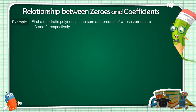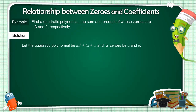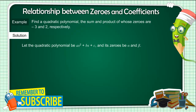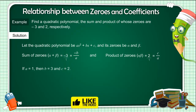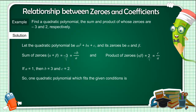Another example: Find a quadratic polynomial whose sum and product of zeros are minus 3 and 2 respectively. Solution: Let the quadratic polynomial be ax² plus bx plus c and its zeros be alpha and beta. Sum of zeros alpha plus beta equals minus 3, which equals minus b by a. Product of zeros alpha·beta equals 2, which equals c by a. Writing 1 as denominator, if a equals 1 then b equals 3 and c equals 2. So one quadratic polynomial which fits the given conditions is x² plus 3x plus 2.